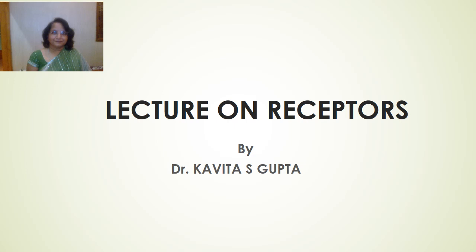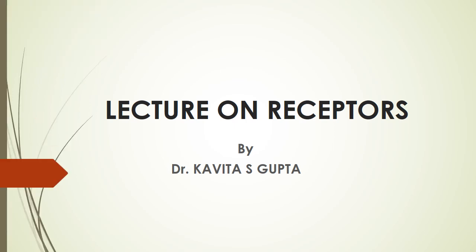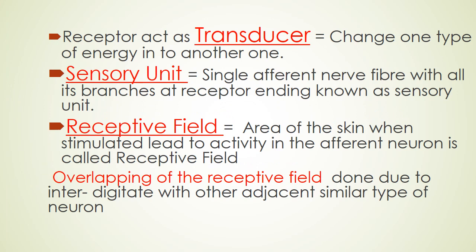This is a lecture on receptors. A receptor acts as a transducer — it perceives and converts one type of energy into another. The celsi unit is a single afferent nerve fiber, and it must be noted that it is a single fiber only.